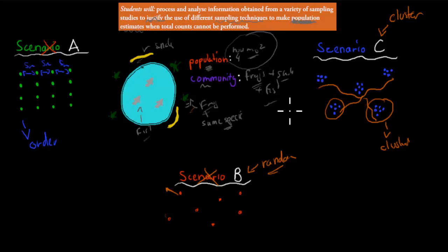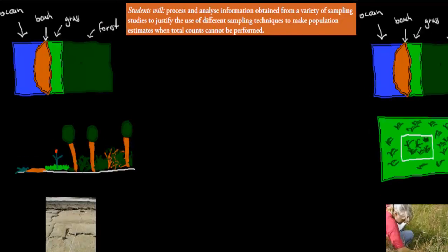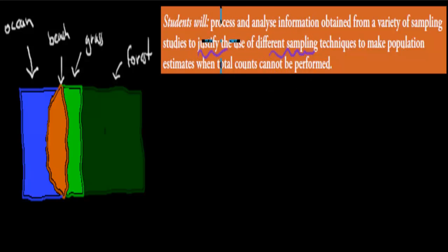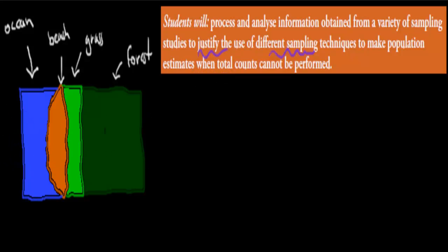What we're going to cover now are some of the techniques we can use to actually count distribution and abundance. The objective says to justify the use of different sampling techniques, so I'll go over the different techniques and justify why we need different ones. First, I'm going to talk about something called a transect.